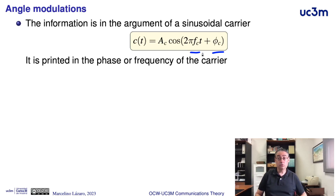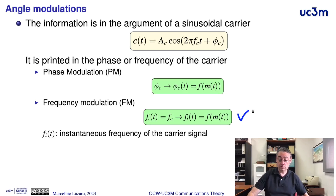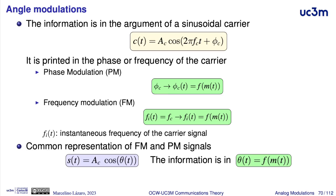Therefore, we will have two variants of angle modulations. We have phase modulations, where the phase is modified according to the modulating signal, and we have frequency modulations, where the instantaneous frequency of the carrier is modified according to the modulating signal. It is possible to have a common representation for these two types of modulations because basically the information is inside the angle of a carrier, and this angle is going to be modified as a function of the modulating signal.